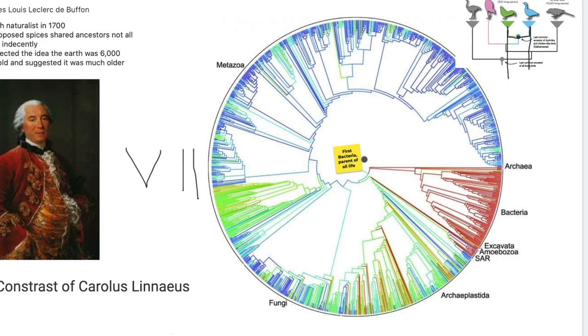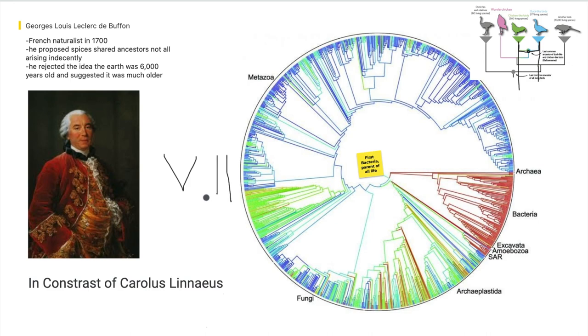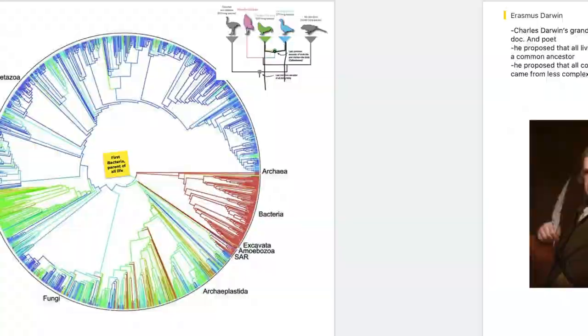It's a larger chart showing how that works. First bacteria, which mutates and slowly evolves into everything else. This is in contrast to Carlos Linnaeus' idea. He rejected the idea that the Earth was only 6,000 years old and suggested that it was much older. Because at that time, people only thought the Earth was 6,000 years old.